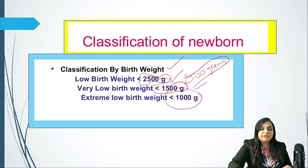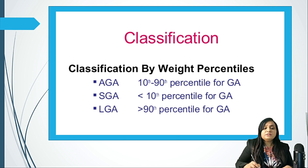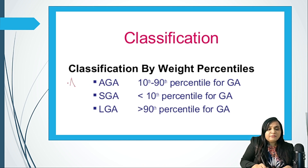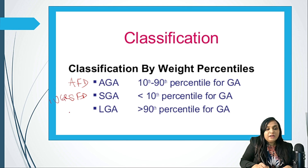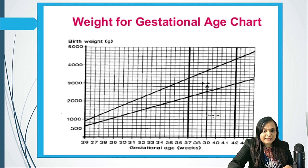The second important classification is by weight appropriate to gestational age: SGA, AGA, and LGA. AGA is also called AFD — appropriate for date — both are the same term. SGA is also called small for date or IUGR, and LGA is large for date or large for gestational age. This will be explained in detail in the next slide.